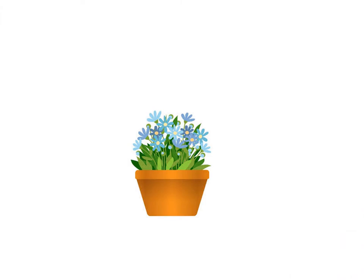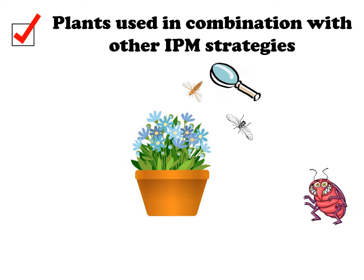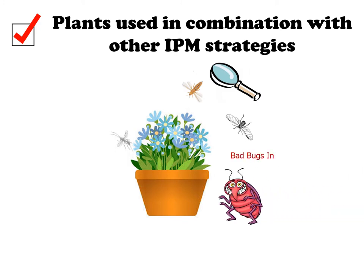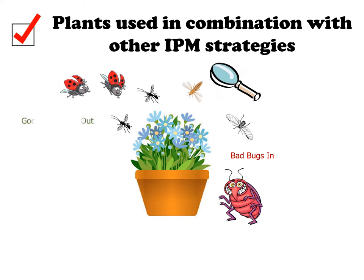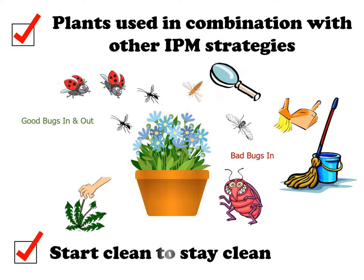Plant-mediated systems are plants used in combination with other integrated pest management strategies. Some systems function as a scouting aid to detect attracted pests. Others provide a site for the release of purchased natural enemies to disperse from, or provide attractive habitat for wild ones. Before the use of these systems, it's important to establish proper cultural practices to start clean, to stay clean, and develop a monitoring routine to detect any issues that may arise.